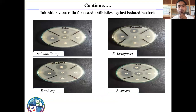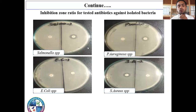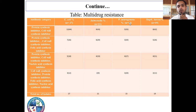Inhibition zone ratio for tested antibiotics against isolated bacteria. I selected 12 different types of antibiotics having different modes of action. First, I applied five different antibiotics against these four bacterial isolates, then another five antibiotics for these bacterial isolates, and at last two different antibiotics. The MDR table shows the antibiotic categories with different modes of action. The isolated bacteria had total numbers of 27, 21, 15, and 19 isolates respectively, and this shows the resistant bacteria and their percentage ratios.